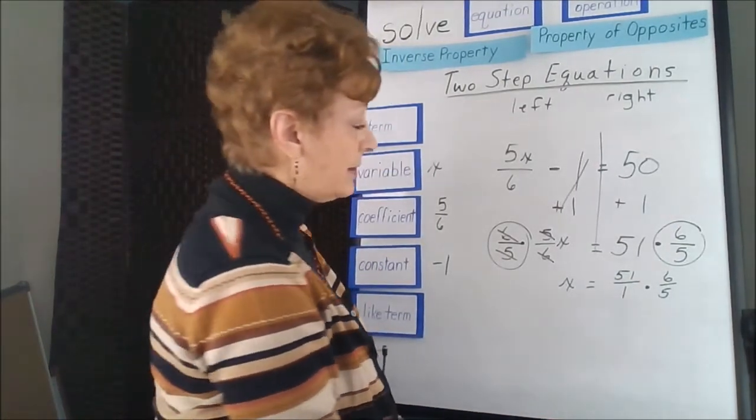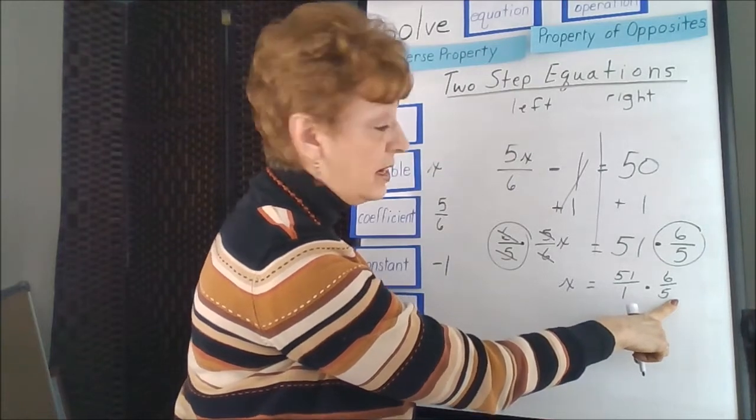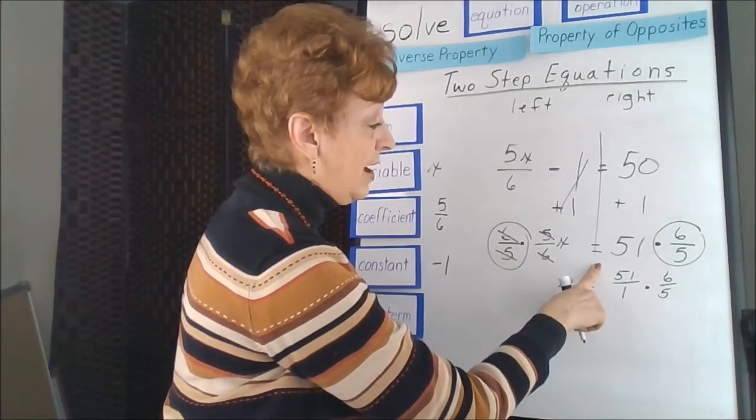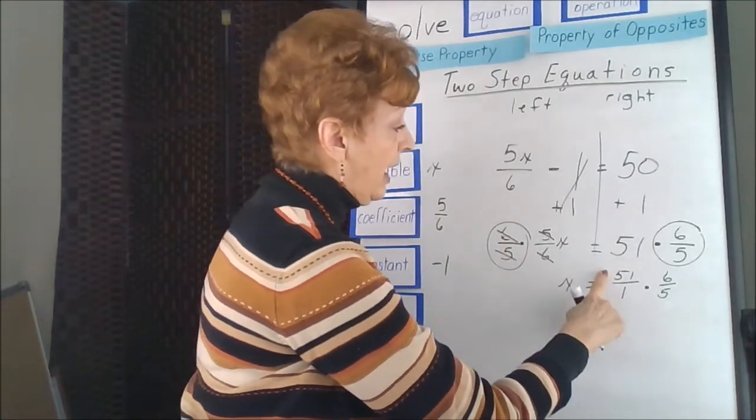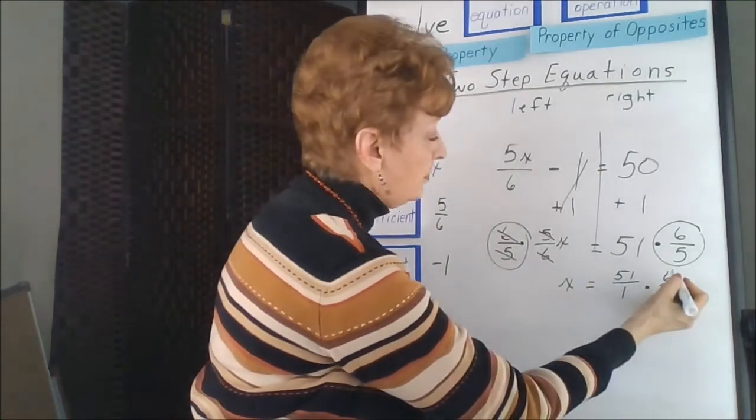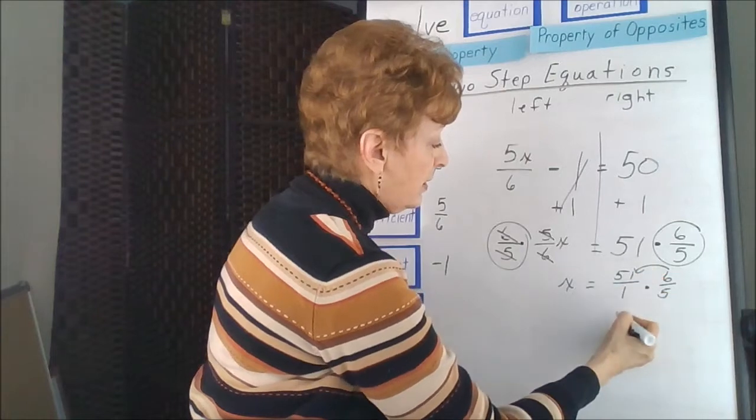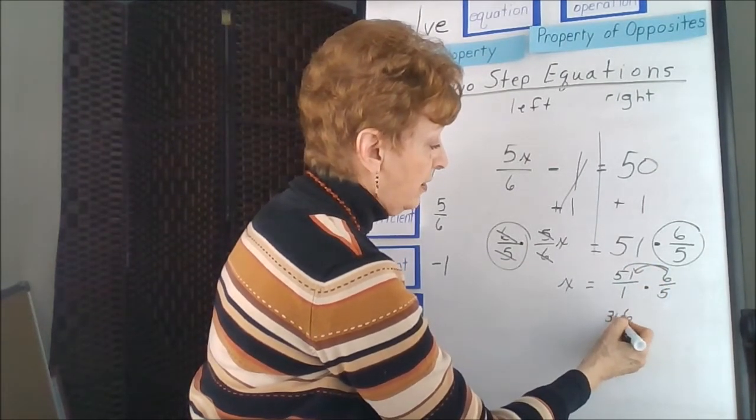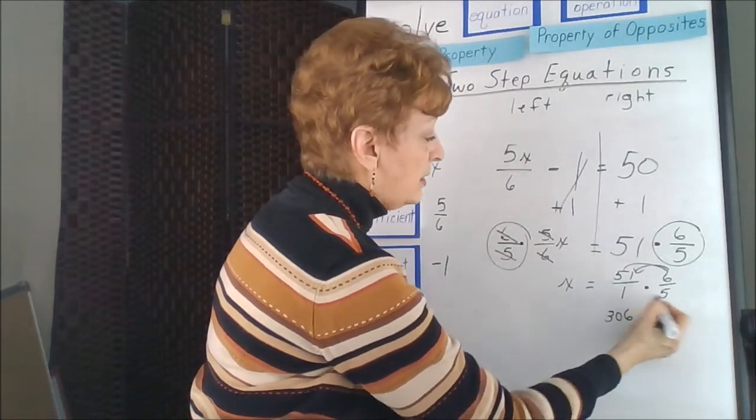Unfortunately we can't because divisibility rules say to divide by a 5, you have to have it in a 0 or a 5, and this does not. So we're going to have to multiply tops. 6 times 1 is 6. 6 times 5 is 30. And 1 times 5 is 5.